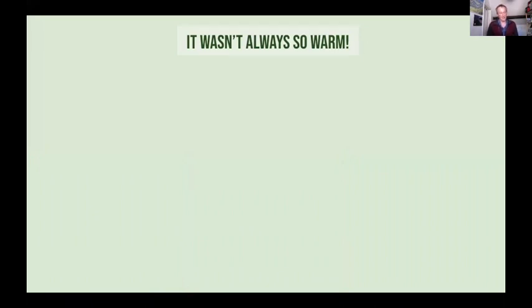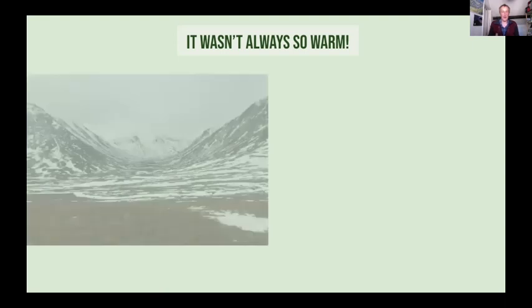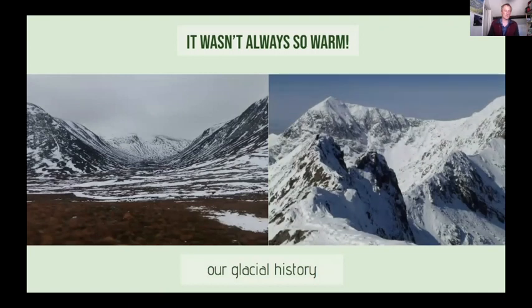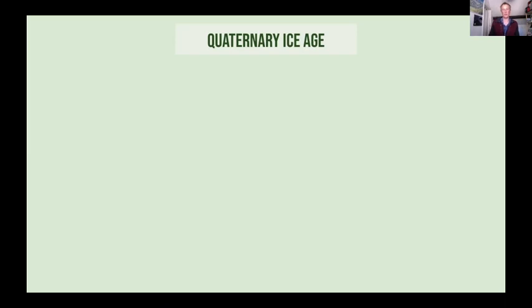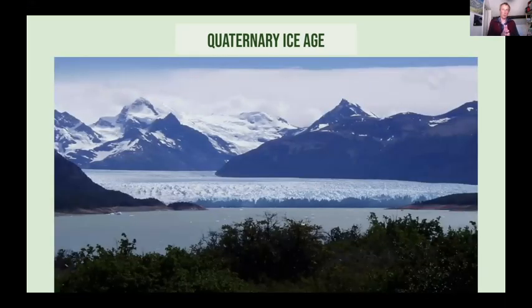But it wasn't always that way. Our landscape is a stark reminder of our long and cold past. In Scotland, Wales, and the Lake District we have beautiful U-shaped valleys carved out by the action of ice — our glacial history. The earth has had permanent ice at one or both poles; in Antarctica there's been an ice cap for two million years. This is known as the Quaternary Ice Age — one of only five episodes in the earth's history where ice has existed at the poles, known as Ice House Earth.